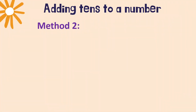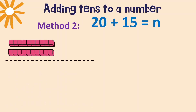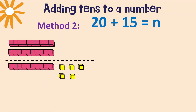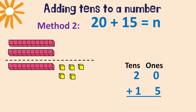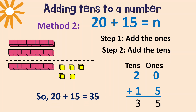Now let's use the second method — blocks. Represent 20 and 15 using blocks: two tens, then one ten and five ones. Write the numbers vertically. Add the ones: zero and five makes five. Add the tens: two plus one is three. So we have three tens and five ones — 20 plus 15 equals 35.